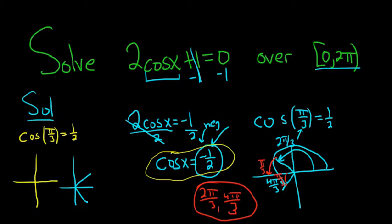If it's going to be negative, because cosine is the x coordinate on the unit circle, the angle has to be here and has to be here. Those are the angles.